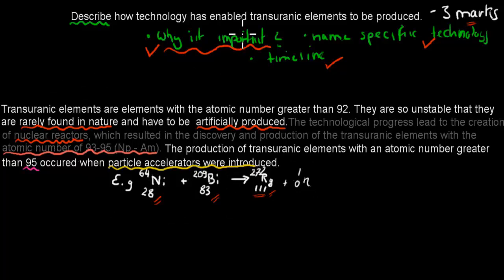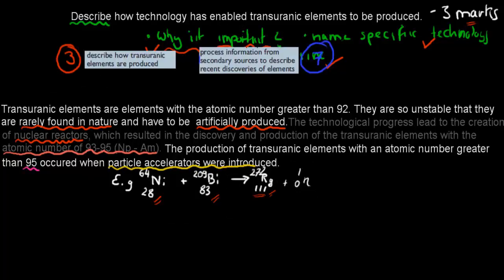So for, like, where does this question come from? What dot point is this related to? It's related to these two dot points. So, describe how transuranic elements are produced. That was video three. It's actually not asking us how they're produced, but asking us related to this dot point, is what technologies were important when it comes to this production. It's also related to this one, which is video number seven. Process information from secondary sources describe recent discoveries of elements. So those two combined gave us this kind of question.